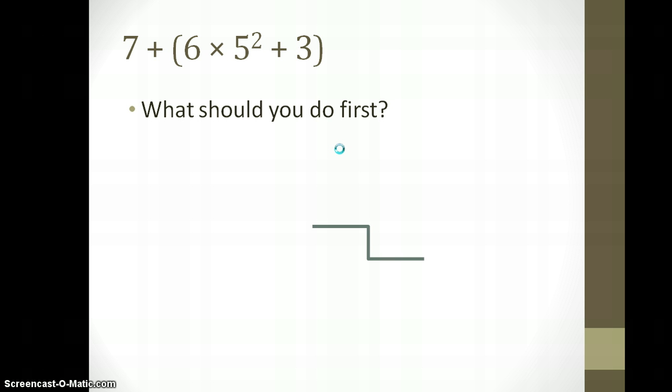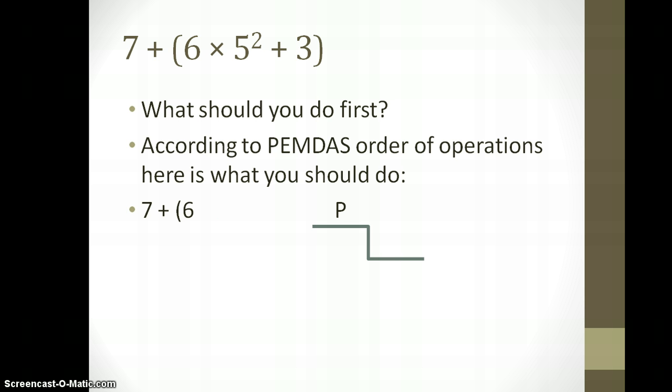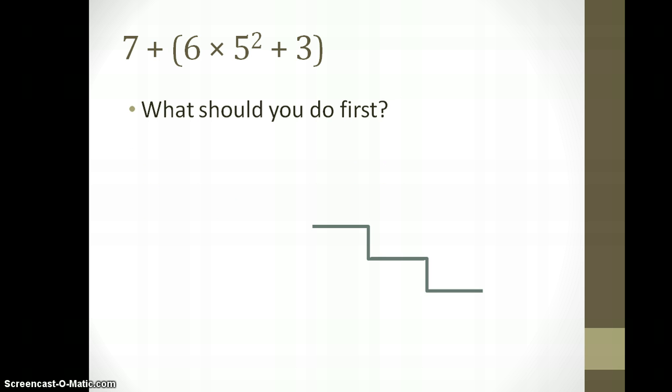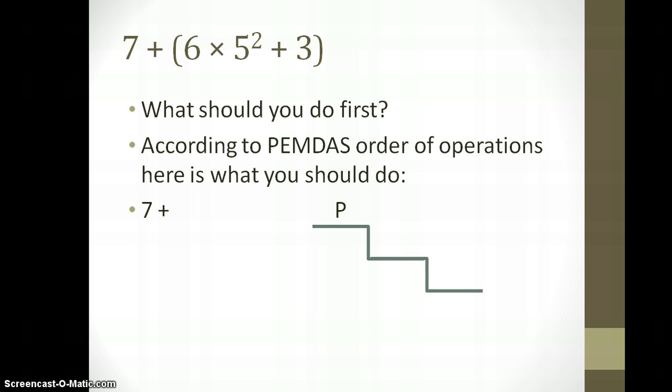What should you do first? The exponent. I kind of gave that answer away. All right, so the exponent there is 5 to the power of 2. Remember, that is not 10. 5 to the power of 2 means two 5s. 5 times 5 is 25. Okay, so we did that as 25. I shouldn't say first anymore. It should say next. But anyway, moving on.